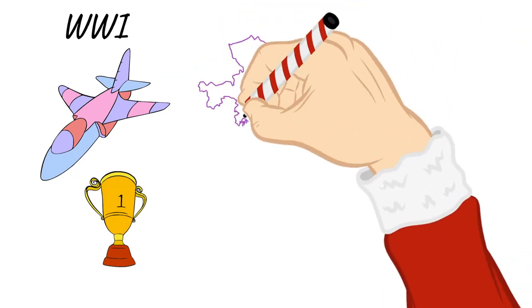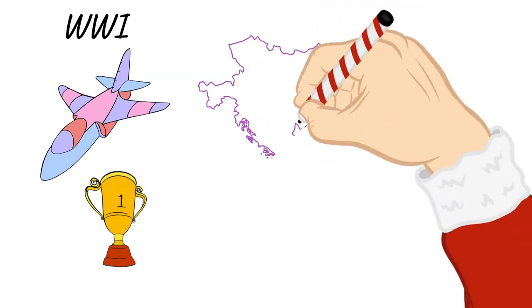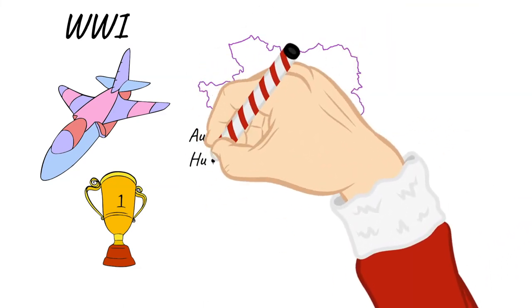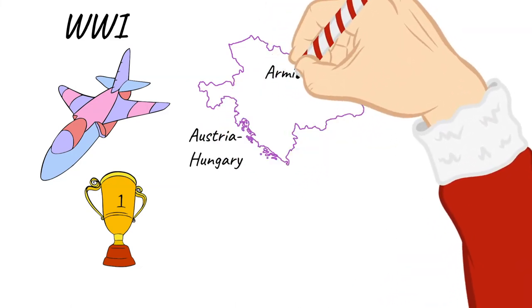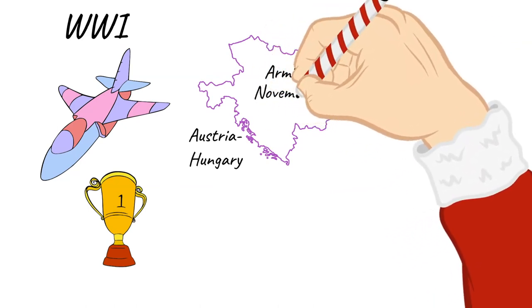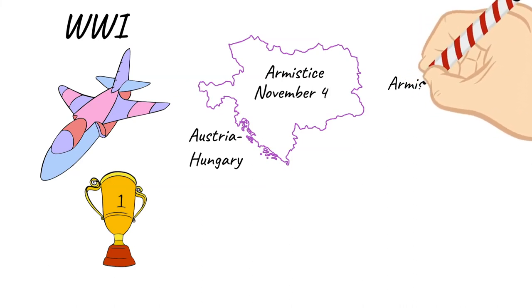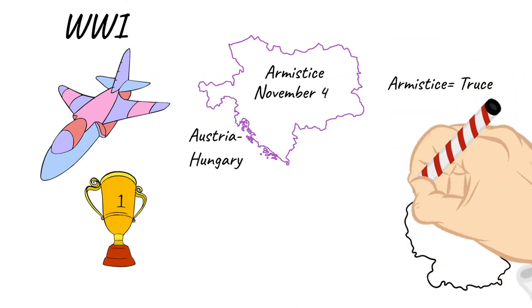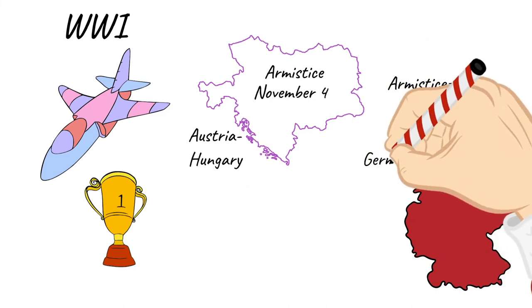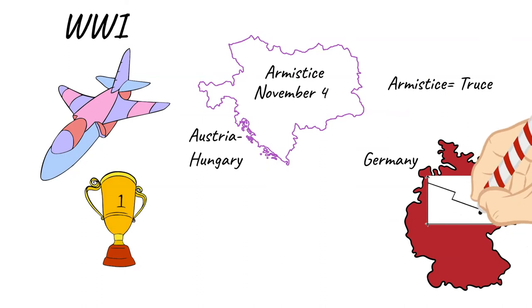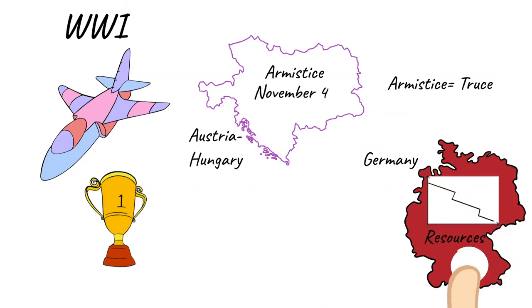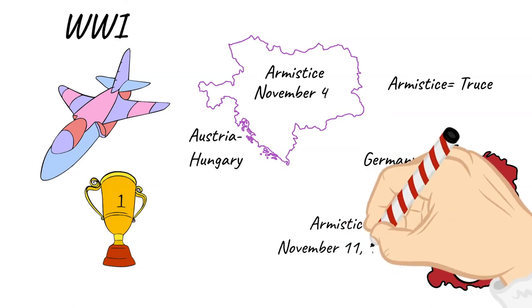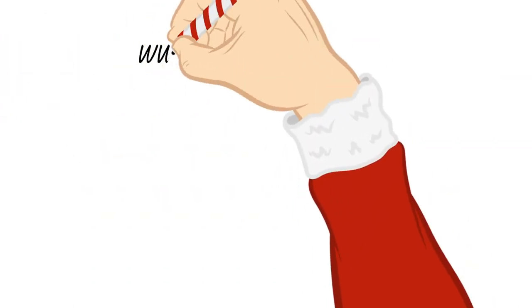By the fall of 1918, the Central Powers were unraveling on all fronts. Austria-Hungary, dissolving from within due to growing national movements among its diverse population, reached an armistice on November 4th. An armistice is when two sides of a war come together and decide to stop fighting and settle on a truce. Facing dwindling resources on the battlefield, discontent on the home front, and the surrender of its allies, Germany was finally forced to seek an armistice on November 11th, 1918. This ended World War I.